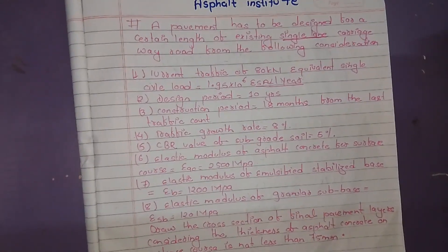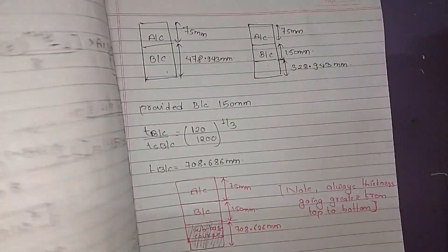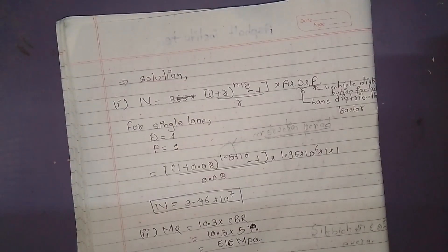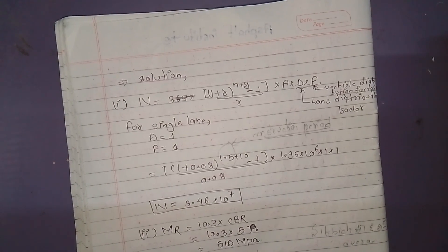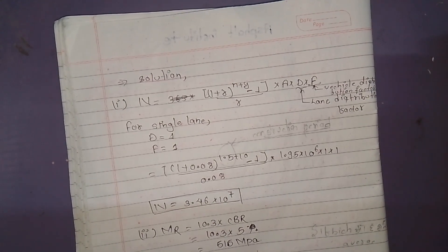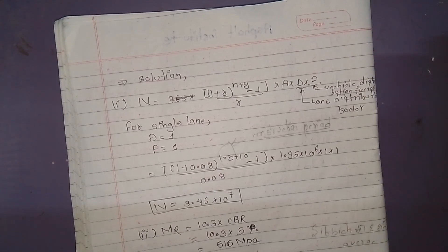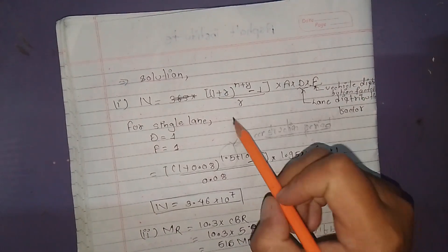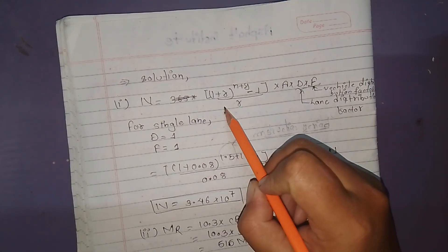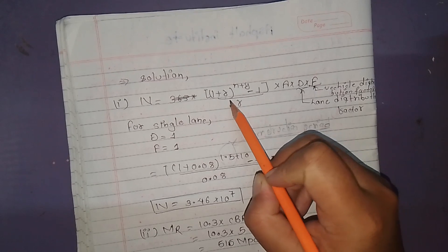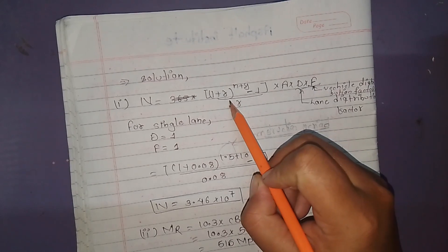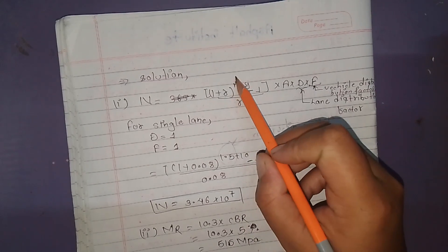Now let's take a look at the solution. The formula is: N = [(1 + r)^(n+y) − 1] / r × A × D × F, where r is the growth rate. The growth rate r is 8%, which is 0.08.